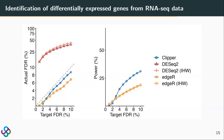Regarding the identification of differentially expressed genes from RNA-seq data, we found that DESeq2 cannot control the FDR, surprisingly. EdgeR can control the FDR. Compared to them, Clipper outperforms EdgeR by having higher power when the target FDR is not too small, and Clipper maintains FDR control.